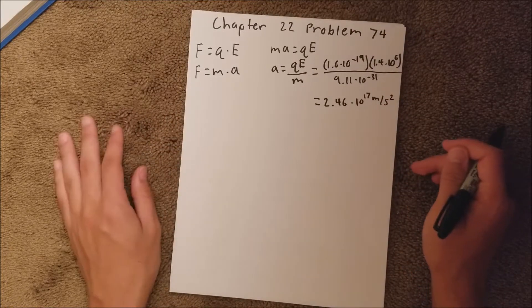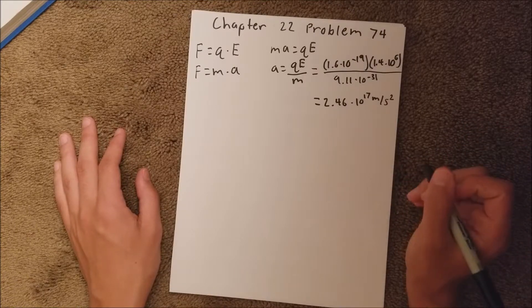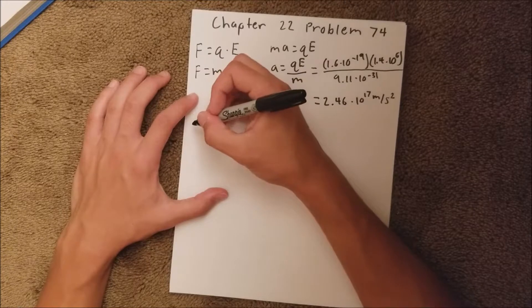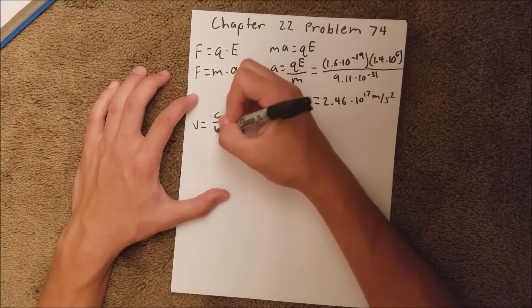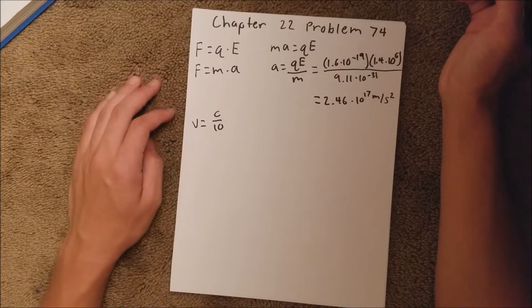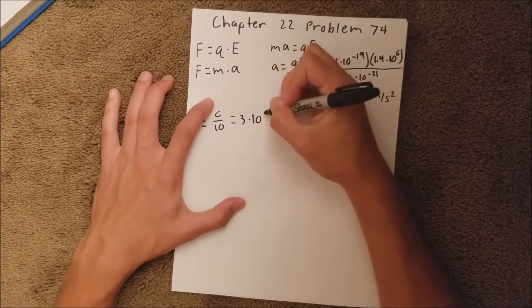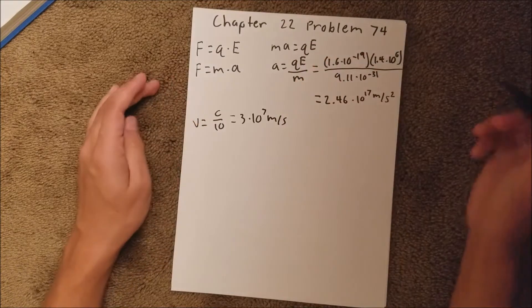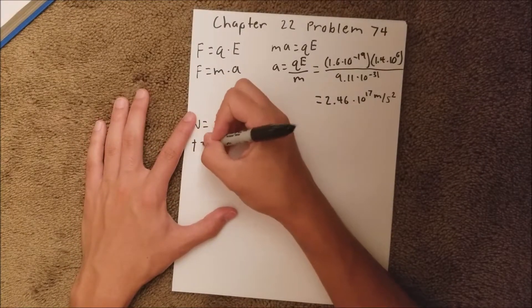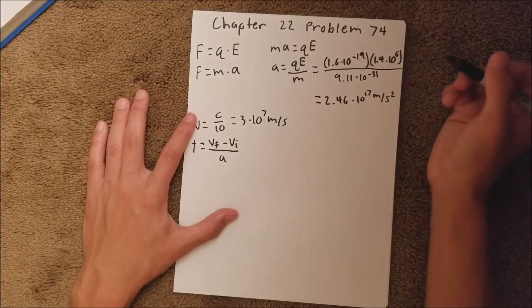And then in Part B, we are asked to find how long it would take for that electron to attain one tenth the speed of light. So velocity is equal to 3 times 10 to the 7th meters per second, and we can use our mechanics equation. So velocity is equal to 3 times 10 to the 7th meters per second, and our initial velocity, since it's starting from rest,